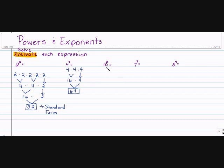10 squared, or 10 to the second power, means 10 times 10. I multiply and I get 100. No exponent, so I know it's in Standard Form.